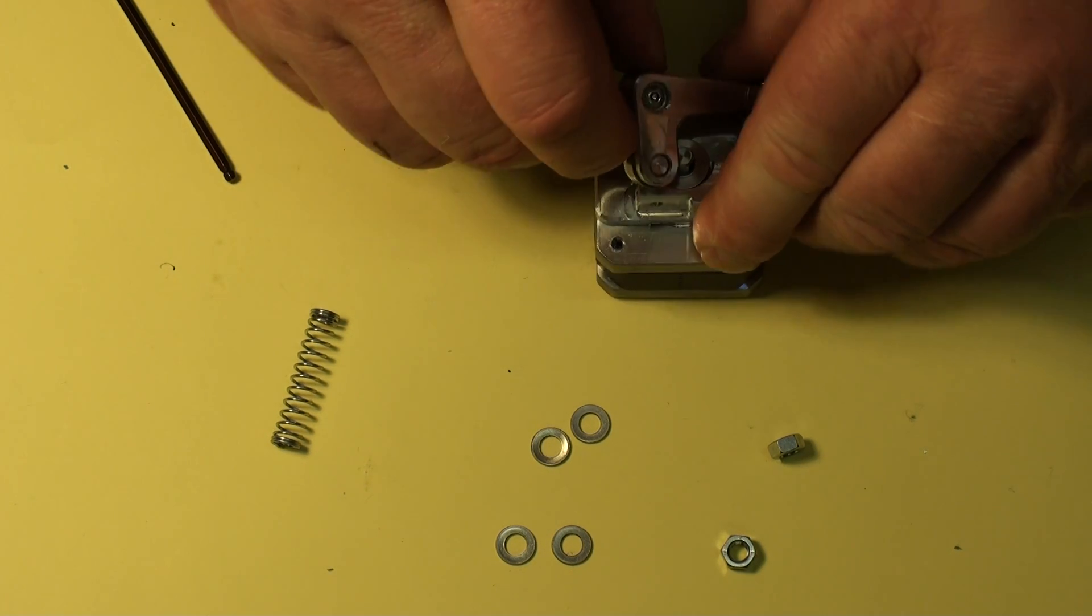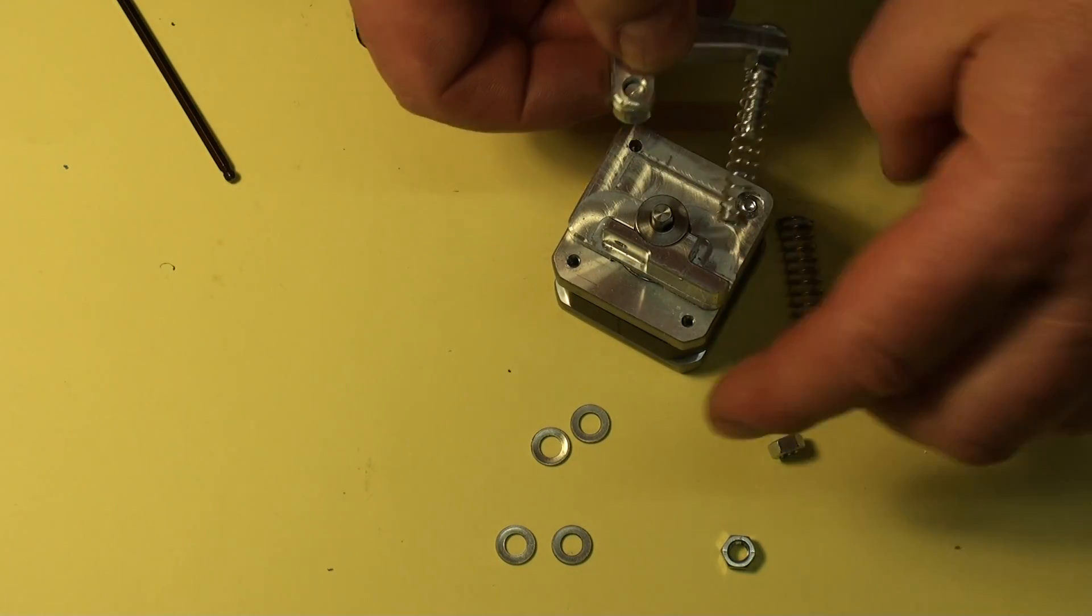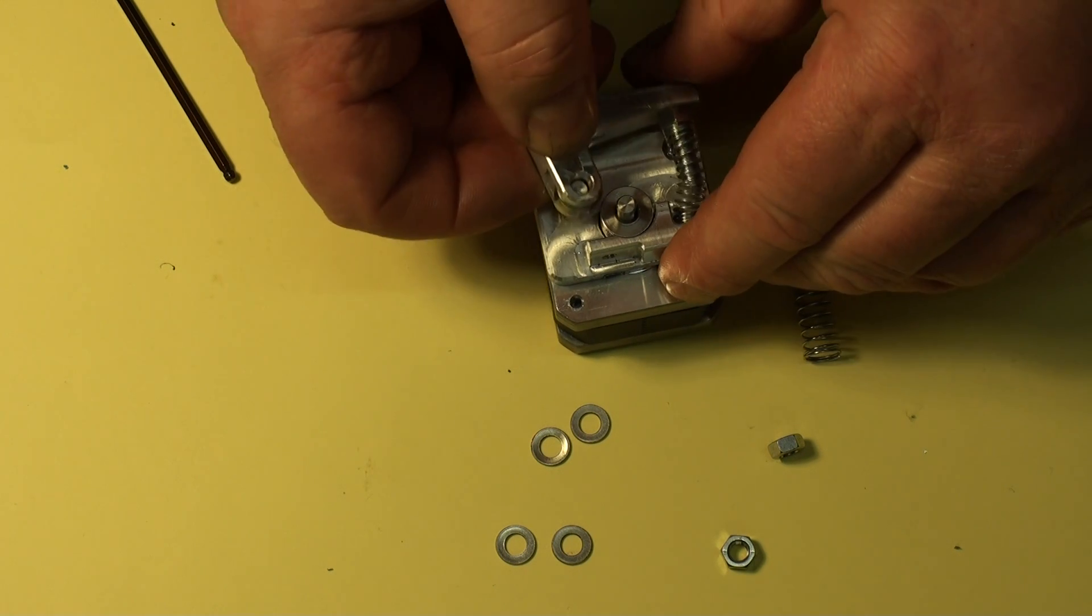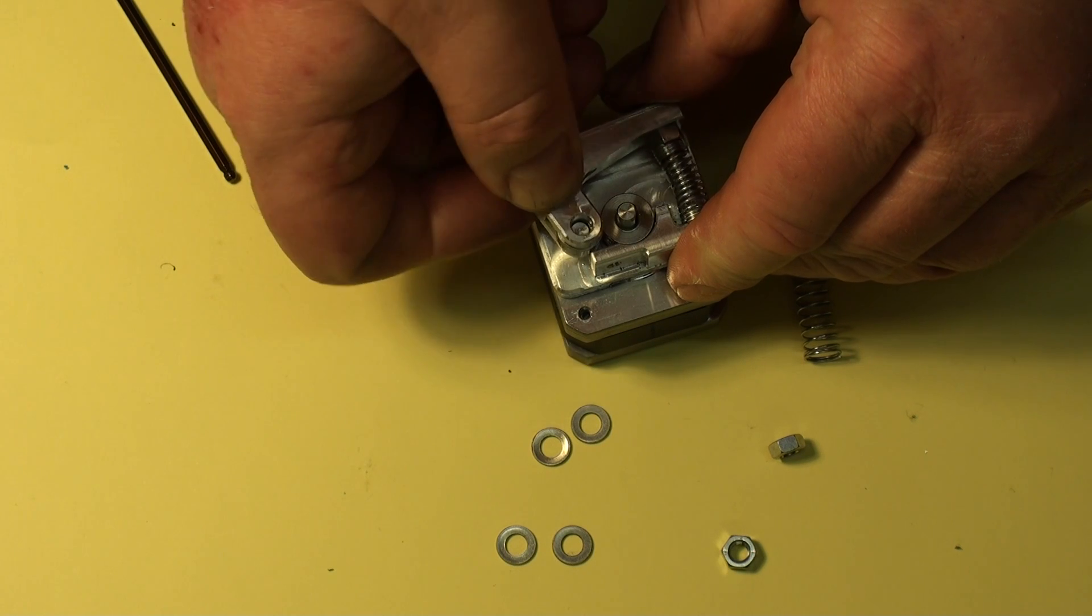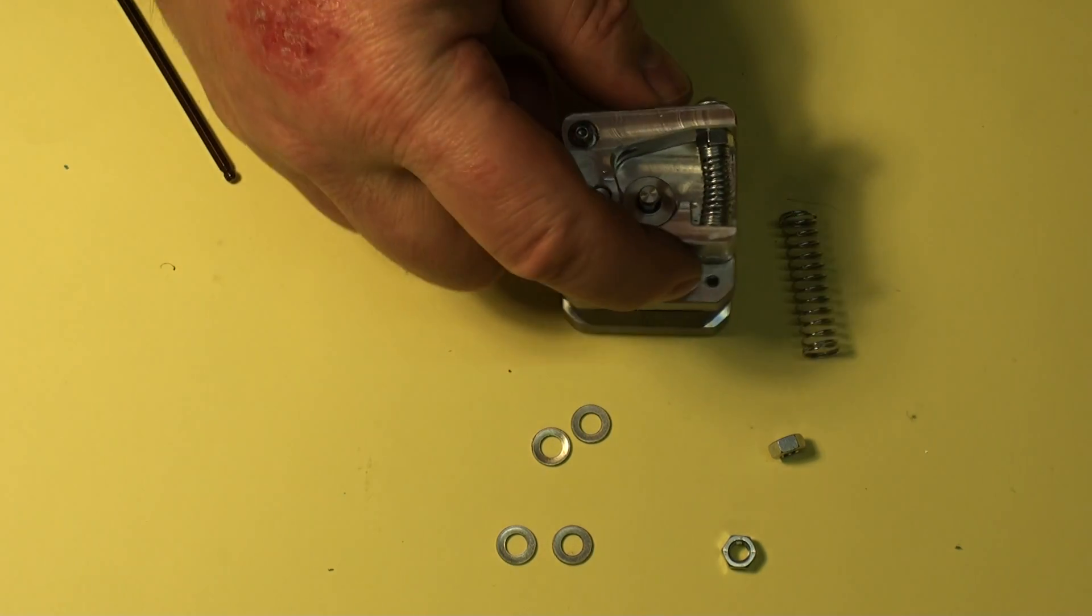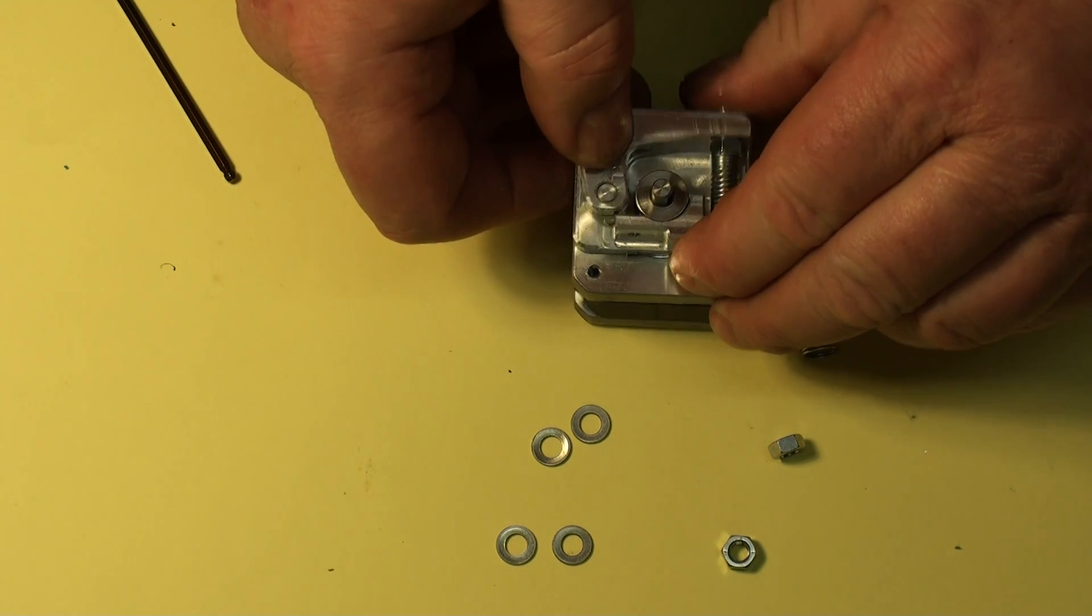Second option after that is to go for the small spring, which is a much higher pressure. In fact, you can see it's fighting me already. So we'll get that in and try not to lose the pin out the back at the same time. Sometimes it's a three hand job. Now that is a much tighter, much more pressure on that roller.